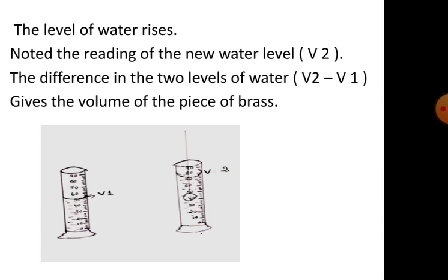Note the reading of new water level, that is V2. The difference in the two levels of water, V2 minus V1, gives the volume of the piece of brass.